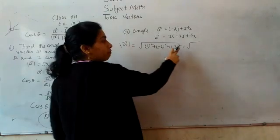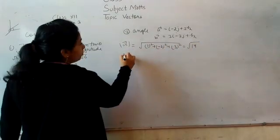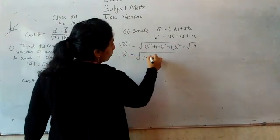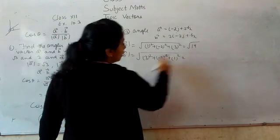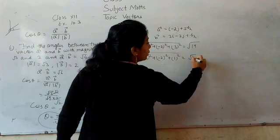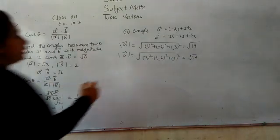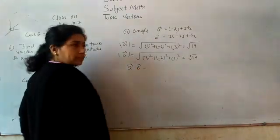Now we have 1 plus 4 is 5, 5 plus 9 is 14. B mode is 3 squared plus minus 2 squared plus 1 squared. 9 plus 4 is 13 plus 1 is 14. Now we have to do A dot B. This is the same thing. How do we do it?